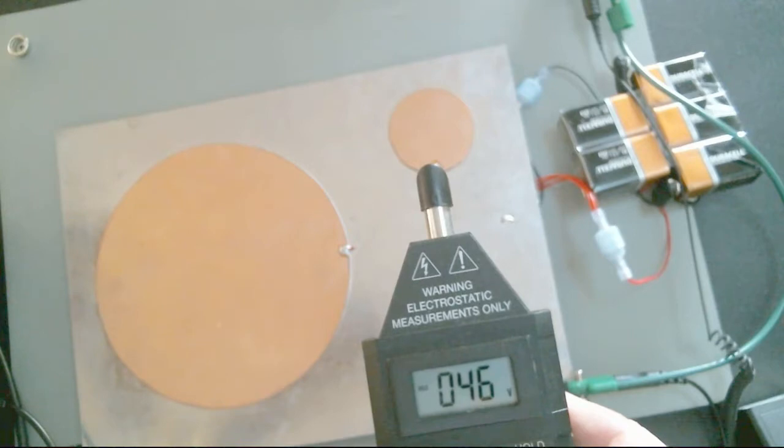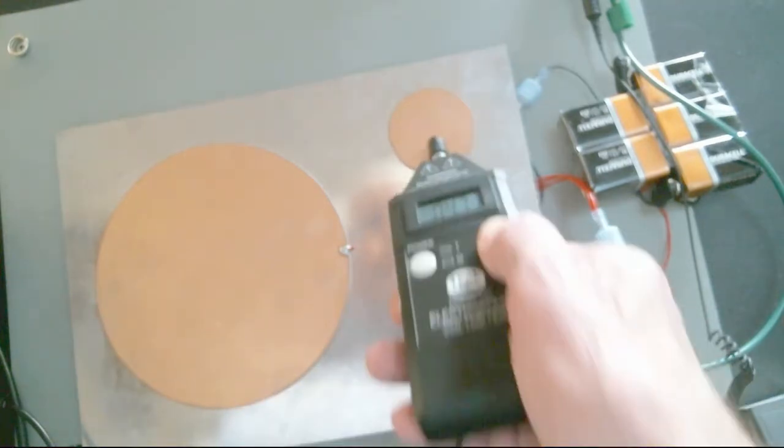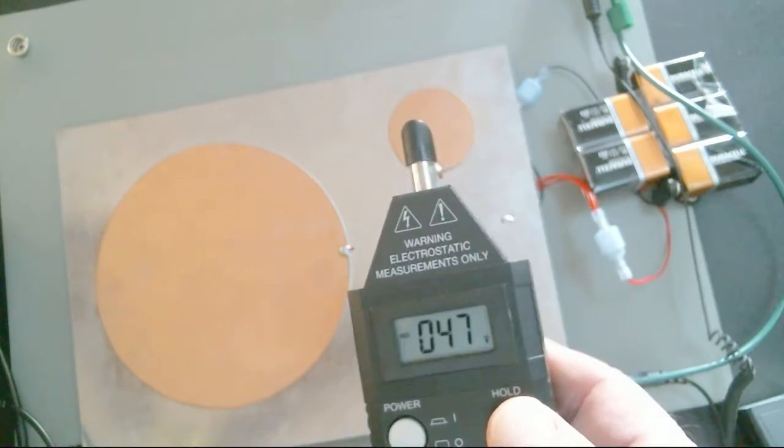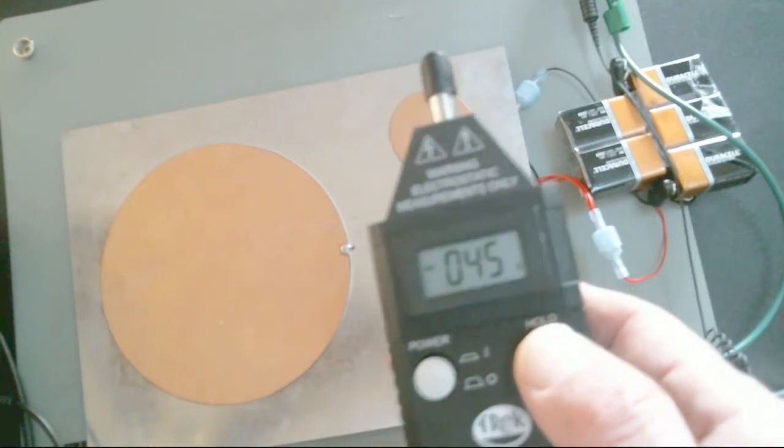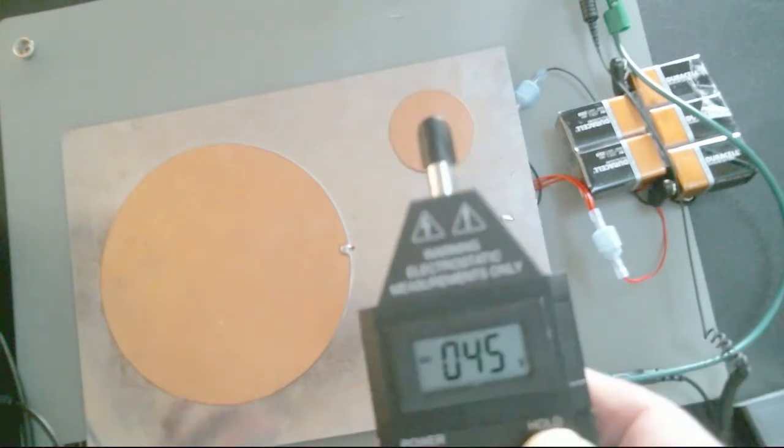We don't necessarily get that every time, but pretty close to it. This time I got 47 volts. And down here, we're going to get something very close to that. Here we got 45 volts. So why is that?